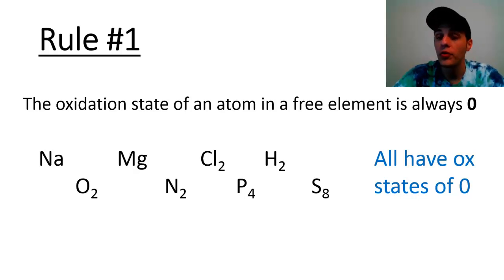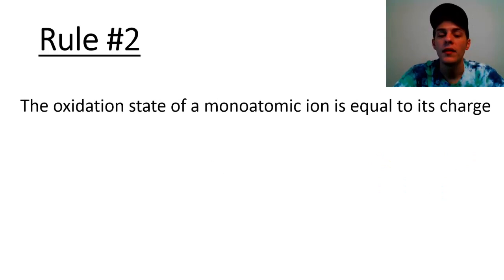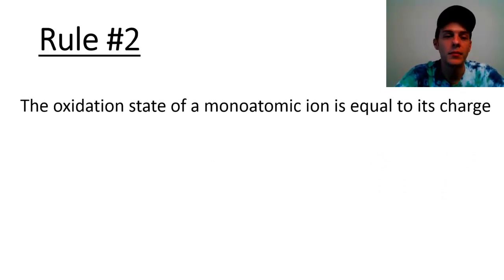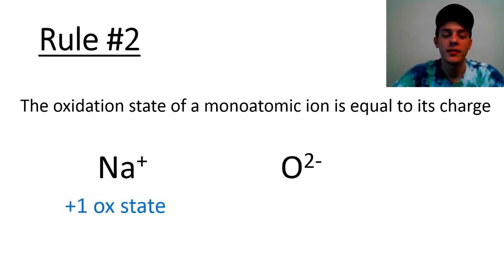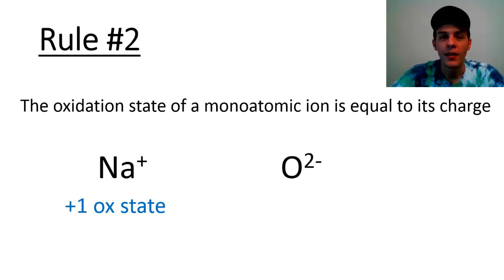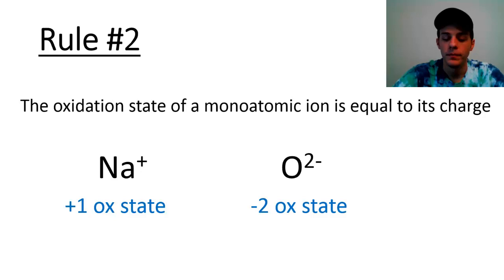Rule number two is also fairly simple: the oxidation state of a monoatomic ion is equal to its charge. So for the sodium ion, the oxidation state of sodium is simply +1 because that's the charge of the ion. And the oxidation state of oxygen in the oxide ion is simply −2, because that's the charge of that oxide ion.